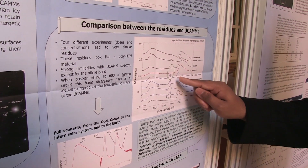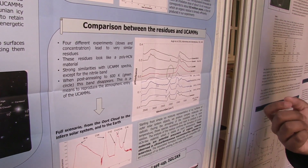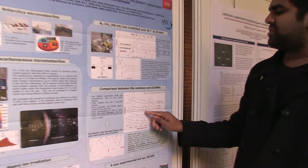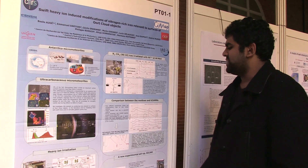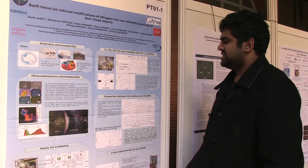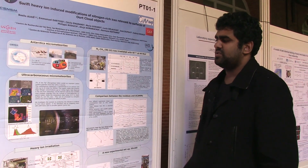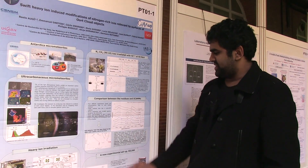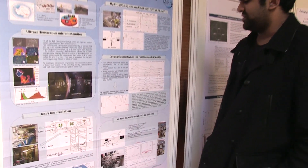We warmed up one of the residues to 600 K to simulate when these micrometeorites enter the Earth's atmosphere. What happens is that this band disappears, and then the spectra looks very close to the UCAM one. So we can see that the scenario is not totally crazy, and it's possible that UCAM micrometeorites come from an Oort Cloud object.